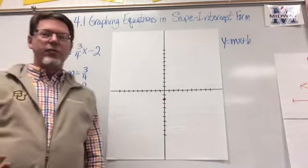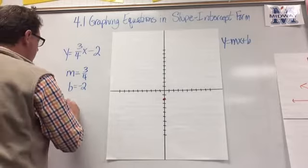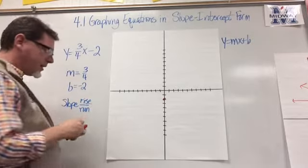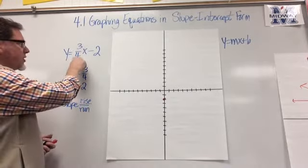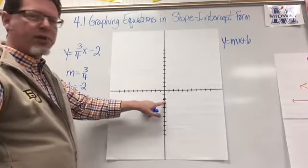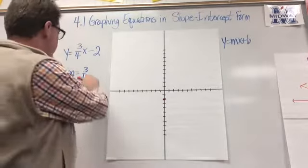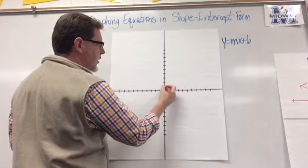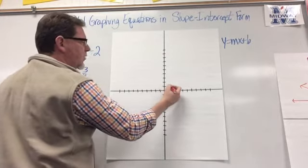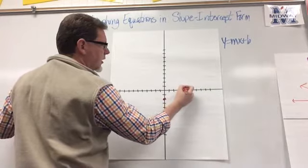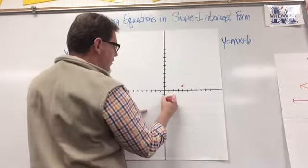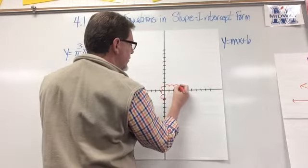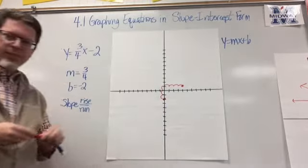Now I'm going to use my slope with the concept of rise over run. Using the slope of 3/4, I rise 3 — going up one, two, three — and then run 4 to the right — one, two, three, four — and there's my second point. I can continue from that point: rise 3 again and run 4, landing on the third point of my line.